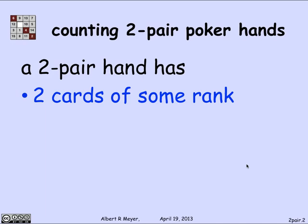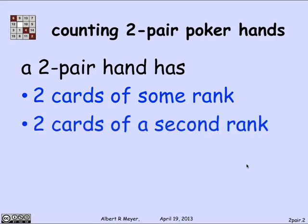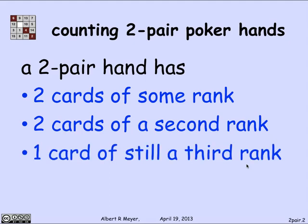So there are 13 possible ranks. We're going to choose two cards of some rank — that's called a pair. Then we're going to choose two cards of a different rank, a second rank. And finally, we're going to choose a card of still a third rank. So we get a pair and another pair and another card that does not match the ranks of either of the first two. That is the definition of a two pair hand in poker.